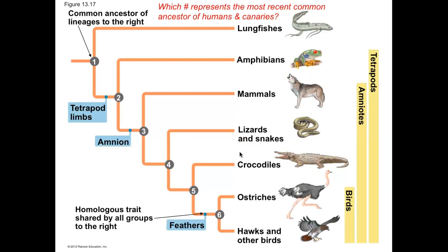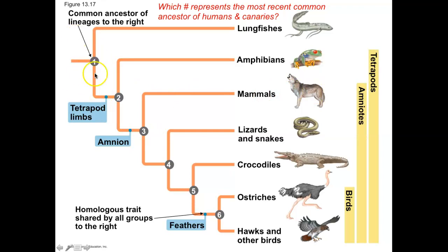Let's practice reading the tree. The question is: which number represents the most recent common ancestor of humans and canaries? On this tree, the farther left you go, the further back in time you are, and what you see on the right is what exists in the present. If you follow any group back along its branch, it will connect to an ancestor node.